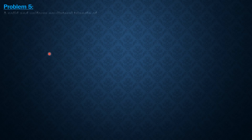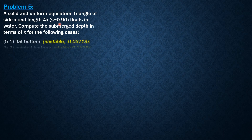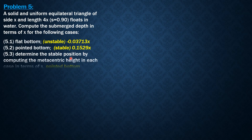Hello everyone. This is example 5 on statical stability of floating bodies, and the body is again non-rectangular. Here is the problem: a solid and uniform equilateral triangle of side x and length 4x, specifically specific gravity 0.9, floats in water. Compute the submerged depth in terms of x for the following cases.